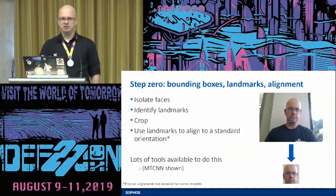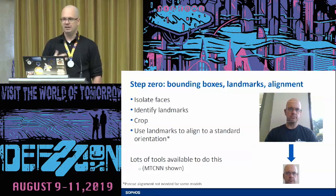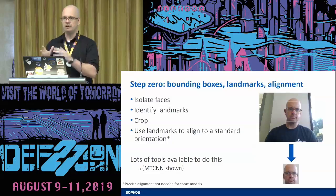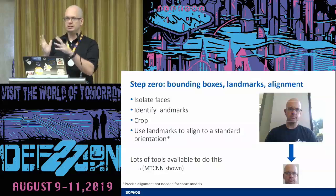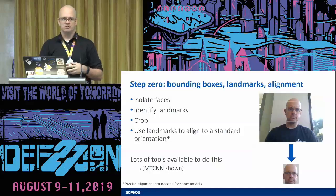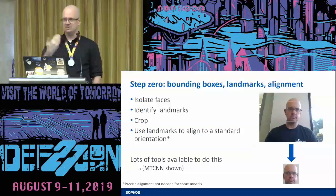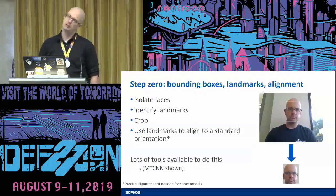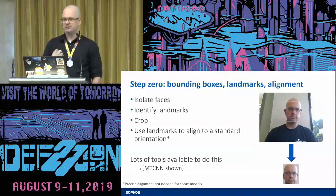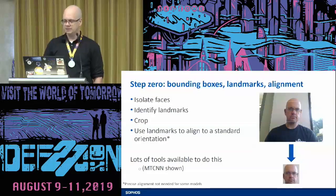Step zero: bounding box, landmark, and alignment. We isolate faces, get a nice box around them, and identify key landmarks — typically the center of each eye, the tip of the nose, the corners of the mouth. Those landmarks serve as reference points for a second stage that tweaks the image into a standard orientation — think of it as an ID photo style tile for each image, so everything's nice and vertical and aligned. There are plenty of well-trained tools to do this online. Alignment is actually not needed for all models — many are trained to handle multiple alignments.